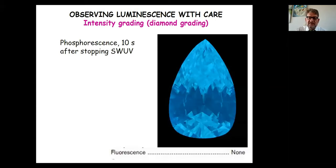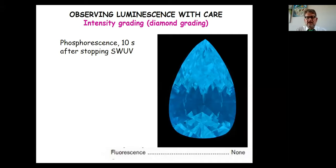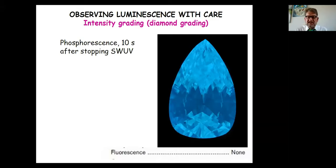A phosphorescent diamond reported as having 'none' luminescence on its certificate is another example of the problem. For phosphorescent materials, you need to wait a couple of seconds before luminescence becomes visible. Either the stone was not observed long enough under UV, or a white background was used. It is important to leave the stone under the light for about 5 to 10 seconds before deciding on luminescence presence, color, and intensity.